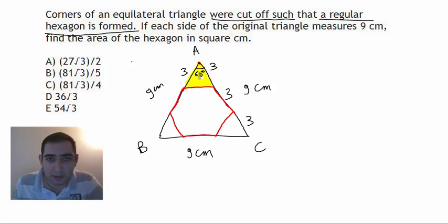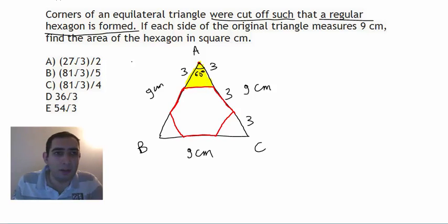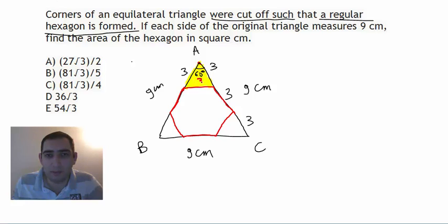The small triangle has one side equal to 3, another side equal to 3, and an included angle of 60 degrees — so it is absolutely an equilateral triangle. Therefore all three of its sides are equal to 3.